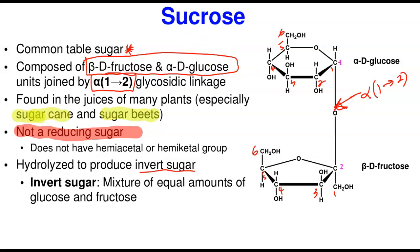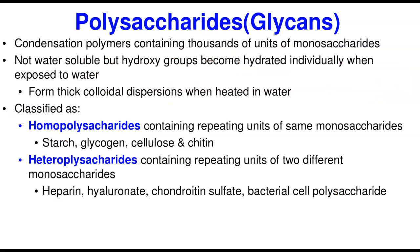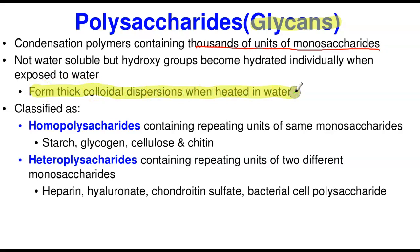Now we'll start talking about polysaccharides — the big ones, otherwise called glycans. They are formed from condensation polymers containing thousands of units of monosaccharide. They are not water soluble — although they have many hydroxyl groups, those groups become individually hydrated when exposed to water, so the most they form is a thick colloidal dispersion. There are two classes: homopolysaccharides and heteropolysaccharides.